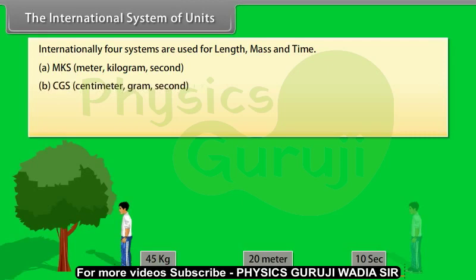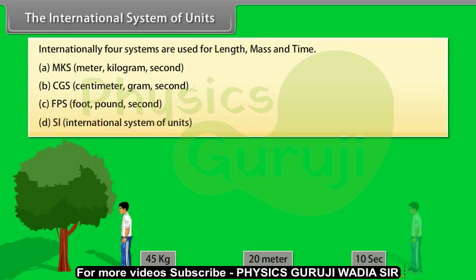CGS system, that is centimeter, gram and second system. FPS system, that is foot, pound, second. And SI system, that is international system of unit.